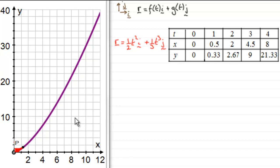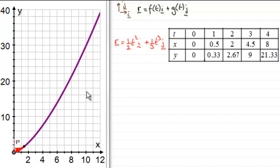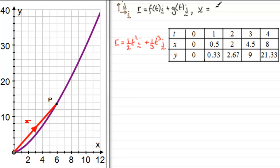As you can see, the particle starts from the origin and moves slowly at first, gaining speed as it moves along the curve. What we're interested in is calculating the velocity and acceleration of P at any time t. The velocity v at any time t is the rate of change of the position vector with respect to time — dr/dt — and acceleration a equals dv/dt.